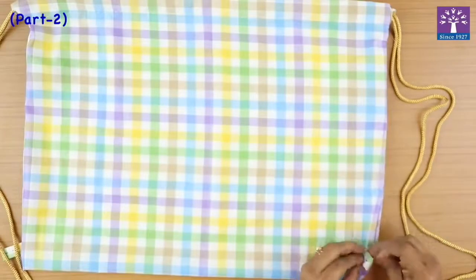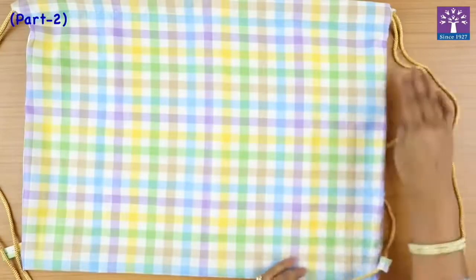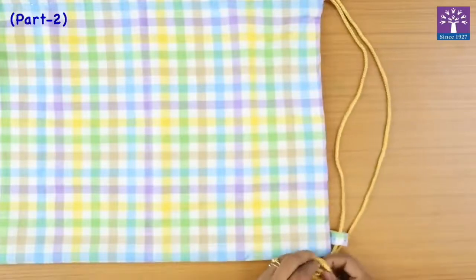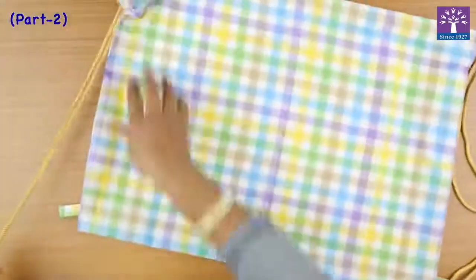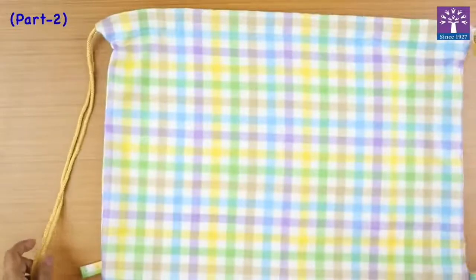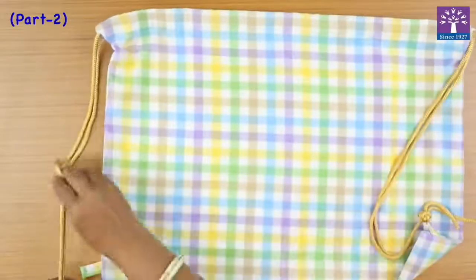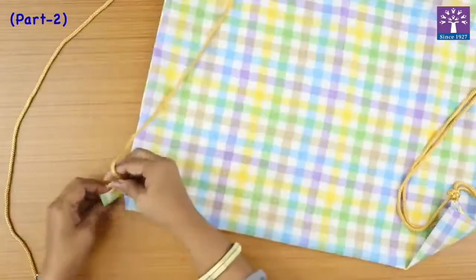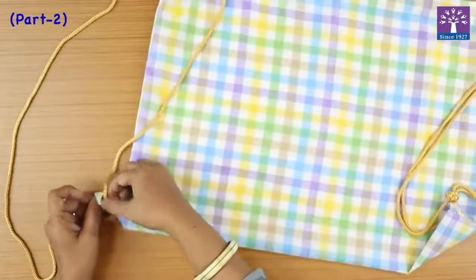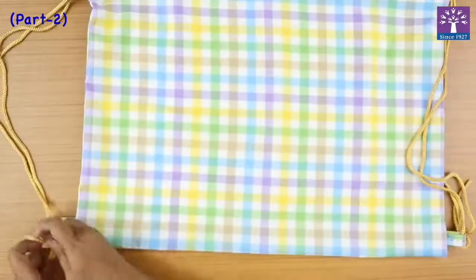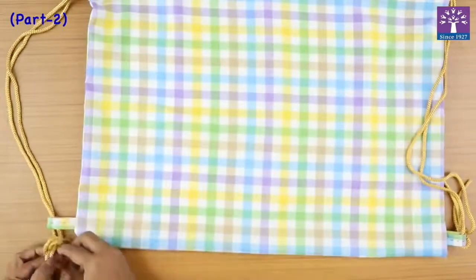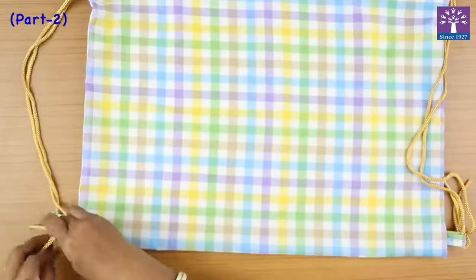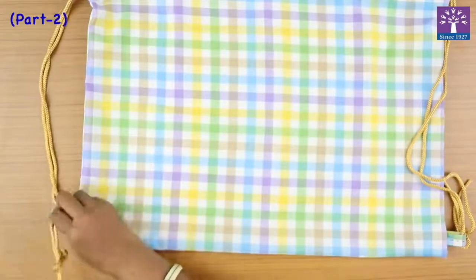So we will pass one side, secure this nicely with a knot. Follow the same process. Make sure that this is of equal length because it is a backpack. Tie two knots. If you want, you can cut off the extra part or just leave it hanging.